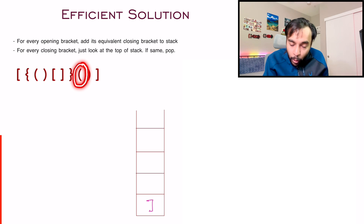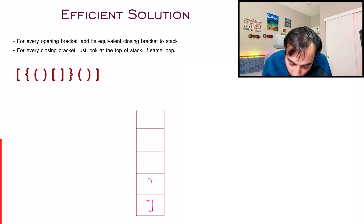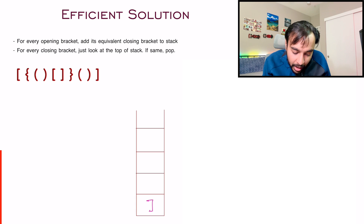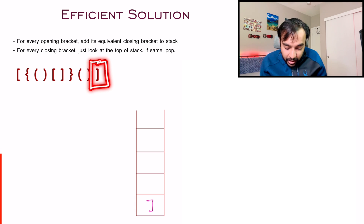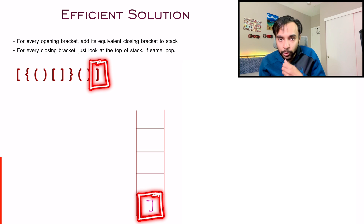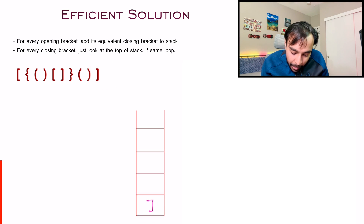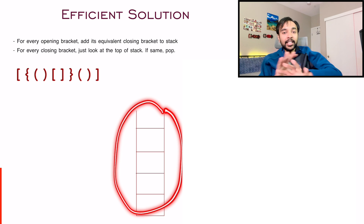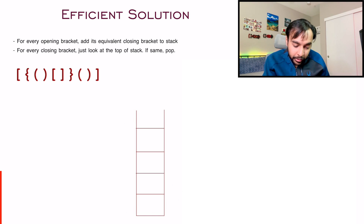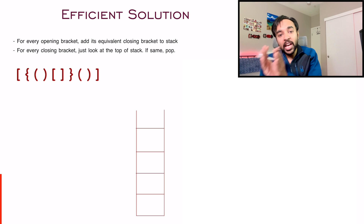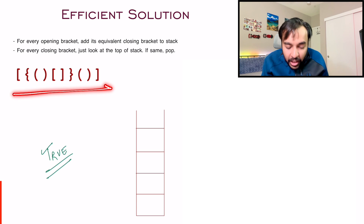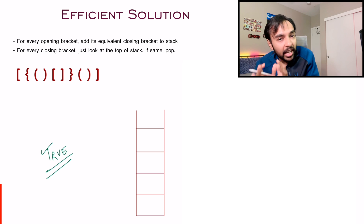You get an opening normal bracket, so add a closing normal bracket to your stack. Move ahead — you get a normal closing bracket, look in your stack, it is the same, so pop the element and move ahead. You get the last element, a closing square bracket, and your stack also has the closing square bracket — they are the same, so remove it. You have now traversed the entire string and your stack is empty, meaning all brackets were taken care of. If you reach the end of the string and your stack is empty, return true. In just one scan of the string, you were able to determine if you have valid parentheses.